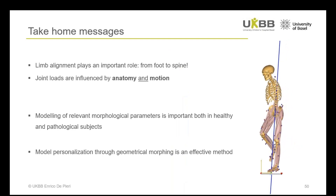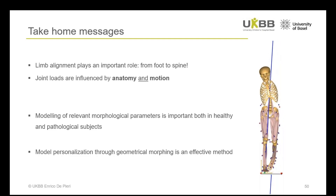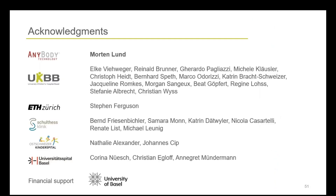To wrap everything up: limb alignment plays an important role in the mechanics of the lower limb, as it affects loads from the foot all the way up to the spine. Joint loads are influenced by both anatomy and motion, so we need to account for all relevant morphological parameters in our models — both for healthy and pathological subjects. Model personalization through geometrical morphing is an effective method to incorporate rotational alignment. I would like to thank Morten for his help in developing the morphing tools, my colleagues from the Children's Hospital in Basel, all collaborators, and the University of Basel for its financial support.